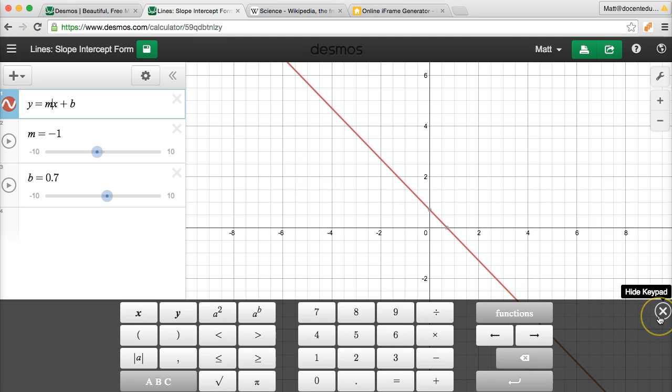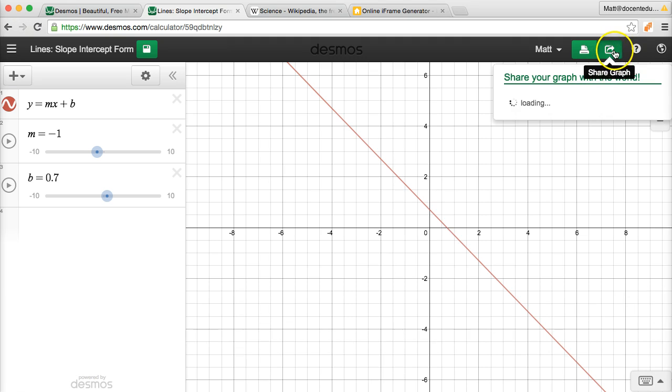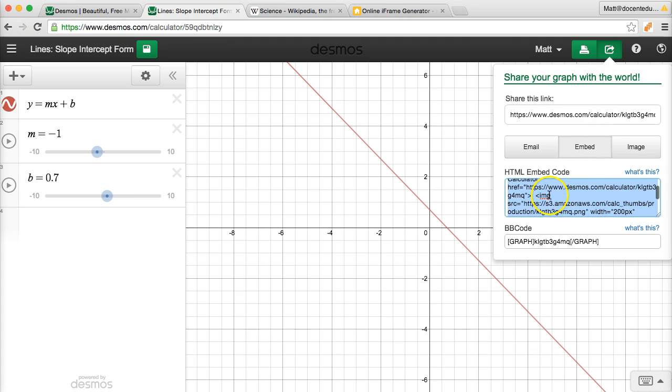There are two ways you can embed this into your documents. One of them is the share graph feature. From here, they give you a little embed code, but this only embeds a static image of it. If I click on embed, it's this code that I want right there. I'll copy that.